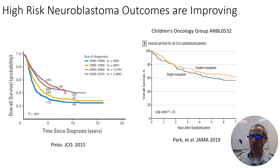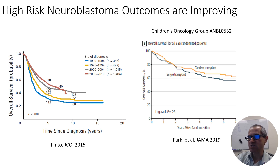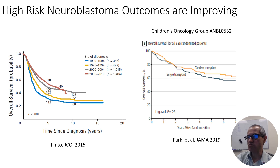With this complicated treatment algorithm, there has been substantial progress in overall outcomes for these patients. If one looks back to the 1990s, only about a quarter of patients were surviving at five years from diagnosis. On the most recent Children's Oncology Group study that has been reported, ANBL0532, the overall survival of patients approached 65 to 70 percent at five years.